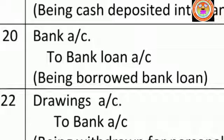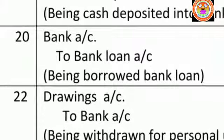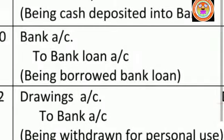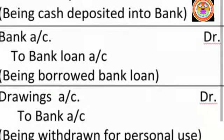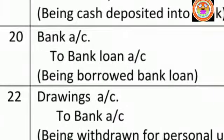If we borrow any loan from the bank, they will not give us cash — they will only credit the money into our bank account. So when we borrow a loan from the bank, the bank account is receiving the money, meaning the banker is the receiver. Using the personal account rule, bank account is debited.